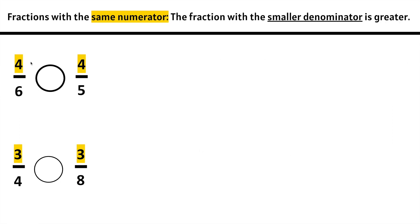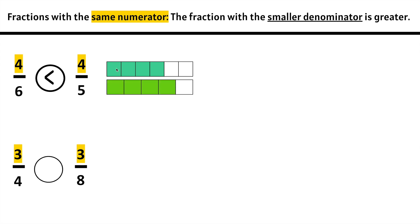Fractions with the same numerator. We are looking at the numerator — the denominators are different, but the numerators are the same, which means we need to look for the smaller denominator, which will be the greater fraction. The 5 is smaller, which means 4/5 is actually greater than 4/6. Let's see why. Let's model 4/6: 1, 2, 3, 4, 5, 6 — and we need 1, 2, 3, 4 out of 6. Now we need 5ths. We notice that 5ths are larger in size than 6ths. 1, 2, 3, 4. The numerator is 4 for both, but because 5ths are greater in size, 4/5 is greater than 4/6. Here we have 1, 2, 3, 4, 5, 6 equal parts with 4 shaded. Here we have 1, 2, 3, 4 — same numerator, out of 5. We can see that 4/6 is less than 4/5.